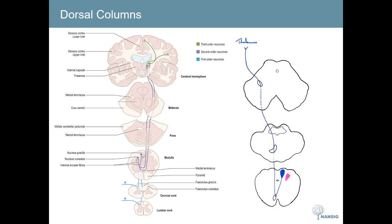There are two nuclei specifically in the medulla: nucleus cuneatus and nucleus gracilis. The nucleus gracilis is shown in blue and the nucleus cuneatus in pink. This is important because the dorsal columns are somatotopically arranged — sensations from the legs travel in the medial part of the dorsal columns, whereas sensations from the arms and further up the body join in laterally in the dorsal columns.